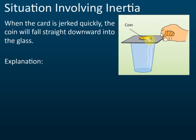The coin initially is not moving — it is stationary. So when you jerk the card and try to move it, the inertia of the coin resists the change of motion. It does not want to move. Since it was initially stationary and resists moving, it stays in place. After the card is removed, it falls down due to gravity. That is inertia — the property of all mass that resists attempts to change its state of motion.